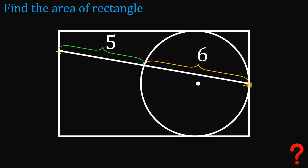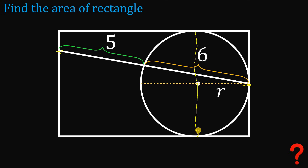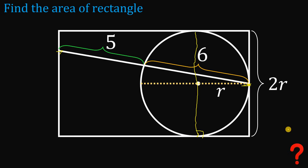One strategy for this kind of question is to focus on the point of tangency. We can connect the point of tangency to the center of the circle to create a radius, or create a diameter. Let's call the radius r, then connect the points of tangency to form a diameter. This diameter is also the height of the rectangle, so the height equals r plus r, or simply 2r.